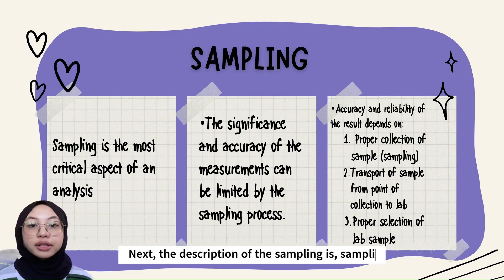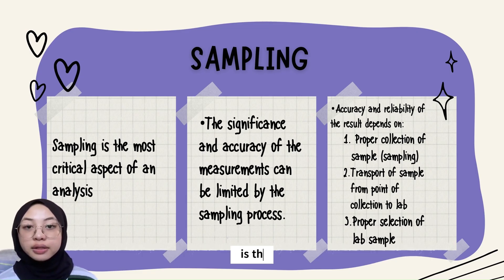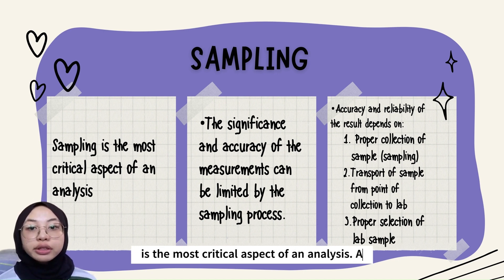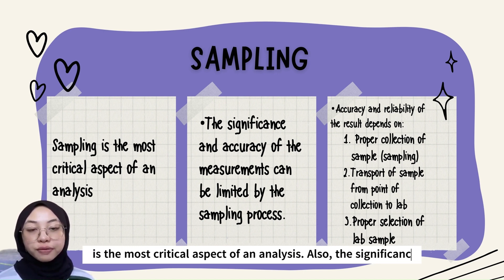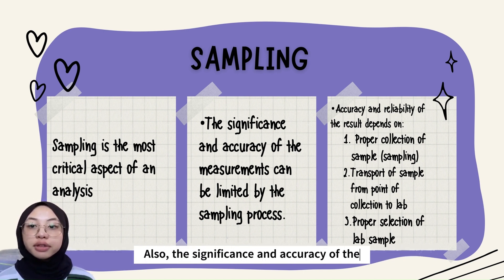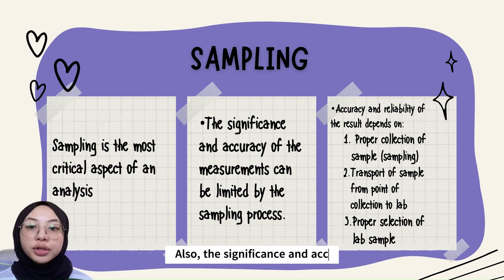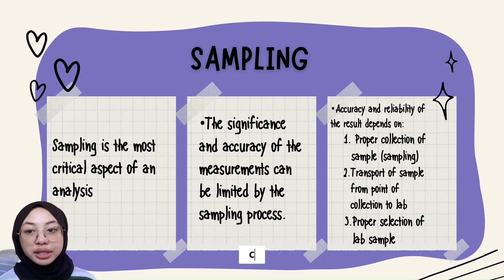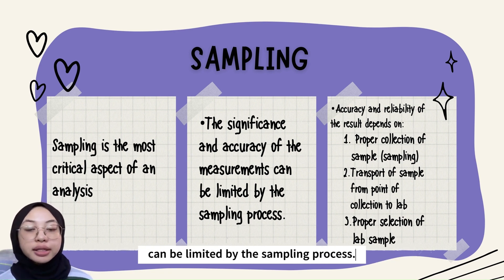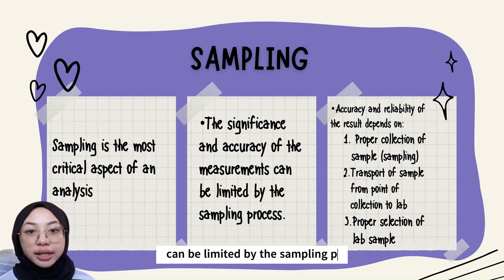The description of sampling is: sampling is the most critical aspect of an analysis. Also, the significance and accuracy of the measurements can be limited by the sampling process.